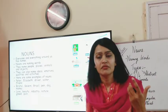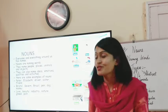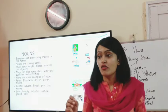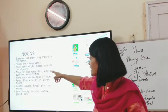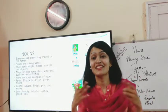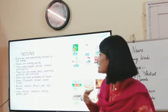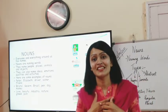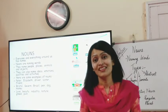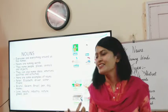Nouns can be people — like Rohan. They can be places — like London or Jodhpur. They can be animals — like dog, Tommy, cat, or elephant. They can also be ideas and emotions — ideas like freedom, emotions like love, hatred, and anger. They can be qualities like honesty — 'I am an honest person.' They can be activities like adventure. They can be things — like a pen or a remote.